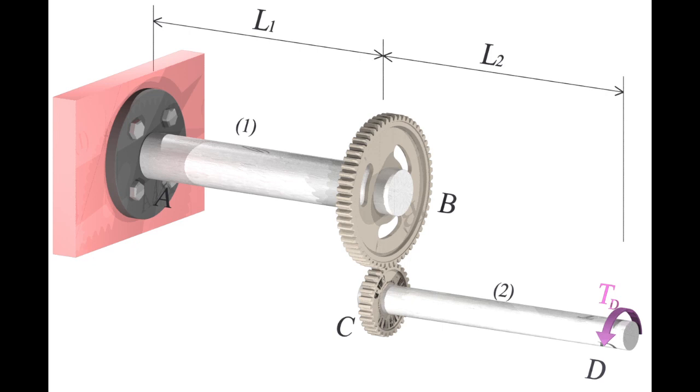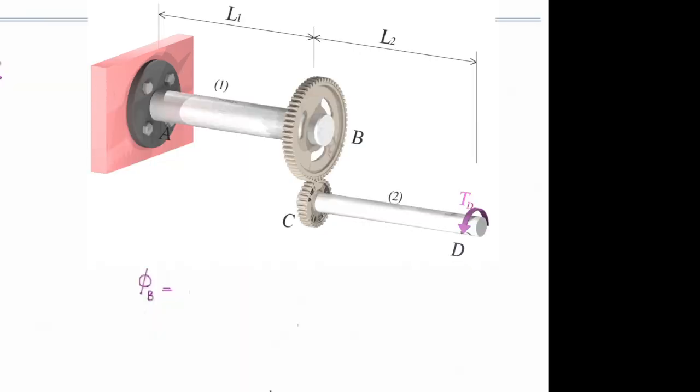To understand that, let me start from the very left end. How much would be the angle of twist at A? It's 0, it's fixed. How much is the angle of twist at B? That would be equal to twist of element number 1. So twist at B will be equal to twist in the shaft number 1.